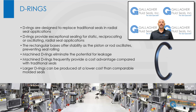D-rings are designed to replace traditional seals in radial applications. With bidirectional sealing capability, D-rings provide exceptional sealing for static, reciprocating or oscillating, and radial seal applications. The rectangular base offers stability as the piston or rod oscillates, preventing the seal from rolling and the leaks or seal failures commonly associated with a rolled or twisted seal. Machined D-rings also eliminate the potential for leakage which can appear at molded seal parting lines in dynamic applications. Machined D-rings frequently provide a cost advantage compared with traditional seals — larger D-rings can be produced at a lower cost than comparable molded seals due to the unique D-ring manufacturing process.